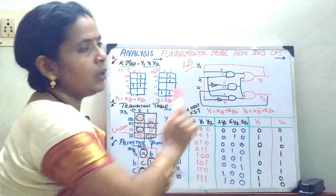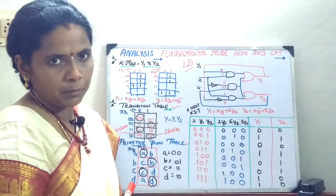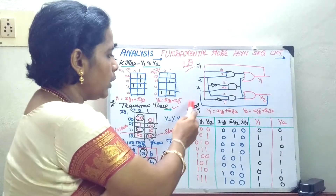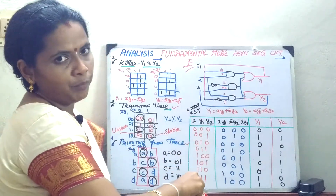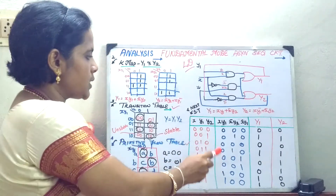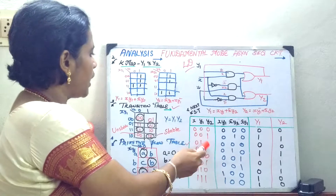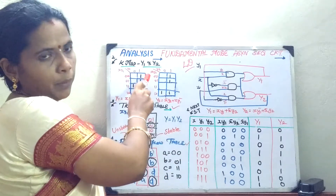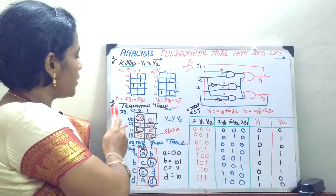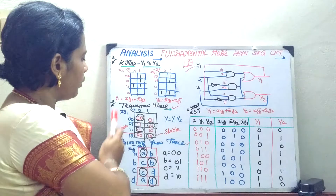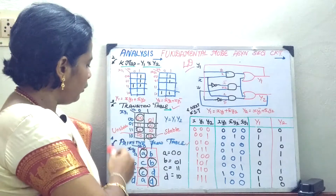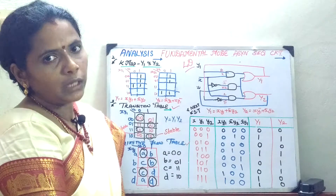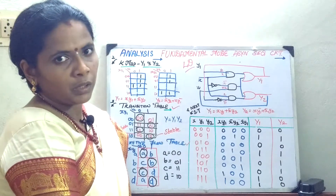You have to frame the equation. Once done with that, you frame your state table. Once the state table is done, the second step is to frame your K-map. The third step is to form your transition table. The fourth step is to form your primitive flow table.